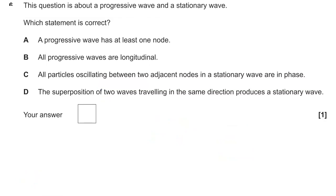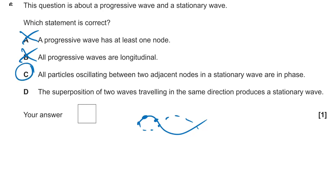Question six: what's true about a progressive wave and a stationary wave? Progressive waves don't have nodes at all, so A is false. All progressive waves being longitudinal is nonsense — they can be transverse too. C is true: all oscillating particles between two adjacent nodes in a stationary wave are in phase, because they all reach their amplitude and equilibrium at the same time. D is wrong — superposition of two waves travelling in the same direction doesn't produce a stationary wave; they need to travel in opposite directions.